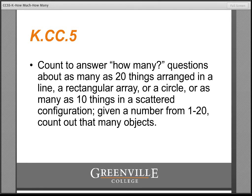In kindergarten, children need many, many opportunities to answer how-many questions. These questions fundamentally get at and reinforce children's understanding of cardinality, and they also serve as a breeding ground for beginning number relationships, which will be the foundation of arithmetic strategies. In counting and cardinality standard five, children should count to answer how-many questions about as many as 20 things arranged in a line, a rectangular array, or a circle, or as many as 10 things in a scattered configuration.